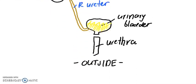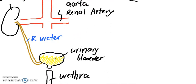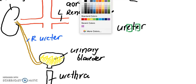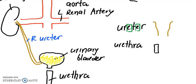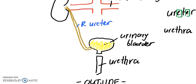A lot of people confuse ureter with urethra. One way to remember: the word 'ureter' has two e's because there are two ureters — one on each side, the right and left ureter. The word 'urethra' does not have two e's because there is only one common urethra. That's how I remember it.